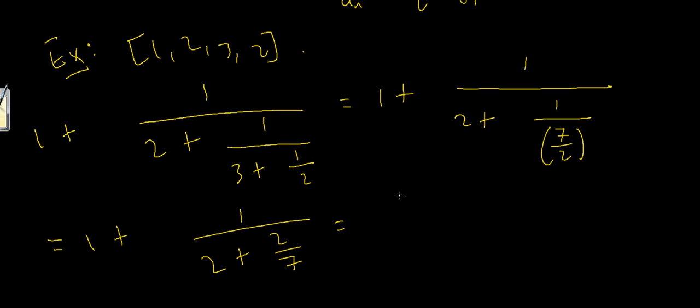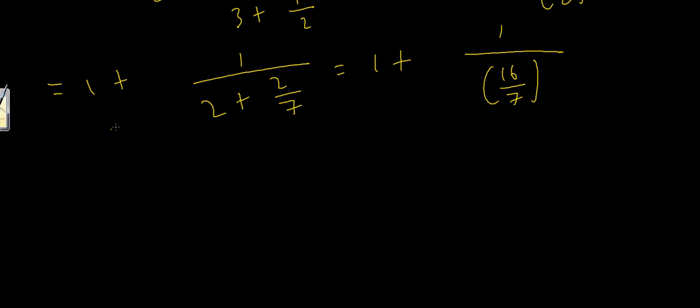Now 2 is 14 over 7, and 14 over 7 plus 2 over 7 is 16 over 7. So this becomes 1 plus 1 over 16 over 7. And as before 1 over 16 over 7 is just 7 over 16.